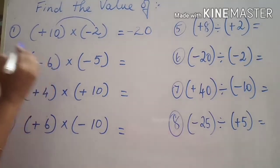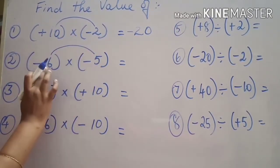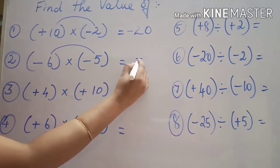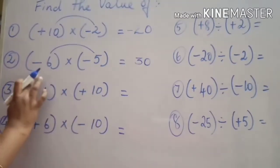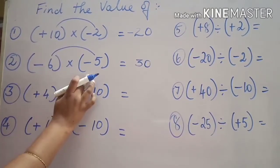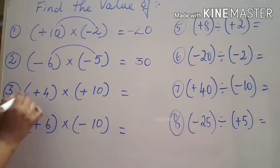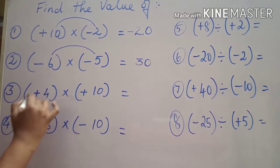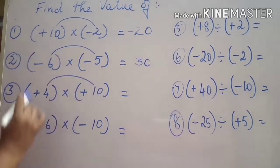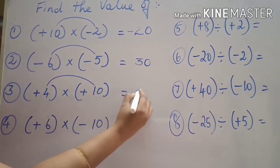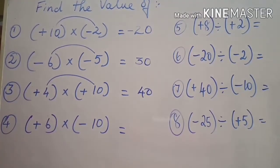Second sum: minus six into minus five. Find the product — six into five is thirty. Minus into minus means both signs are the same, so same sign means the answer is positive: positive thirty. Third sum: plus four into plus ten — four into ten is forty. Both are positive numbers, so the answer is also positive: positive forty.